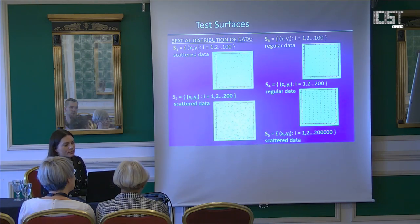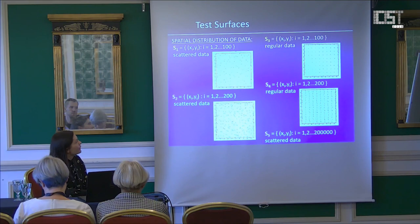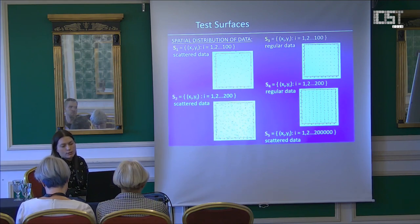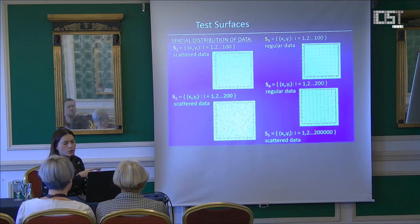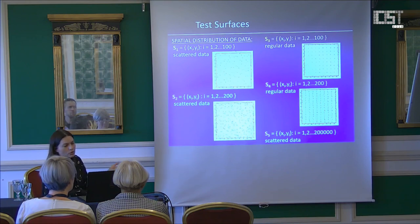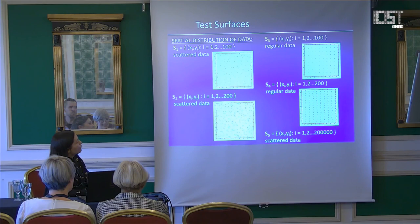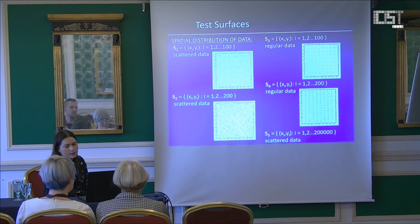In the first part of the experiment, four data sets were used. Generally there are two types of spatial distribution of data points: scattered and regular, and they additionally differed in the number of points. In the second part — the reduction part — we used scattered data sets containing 200,000 data points.